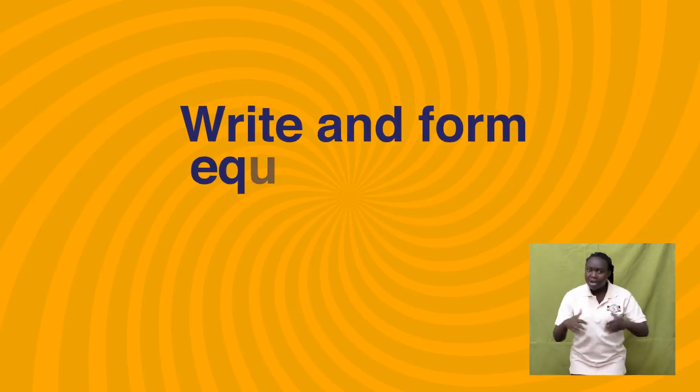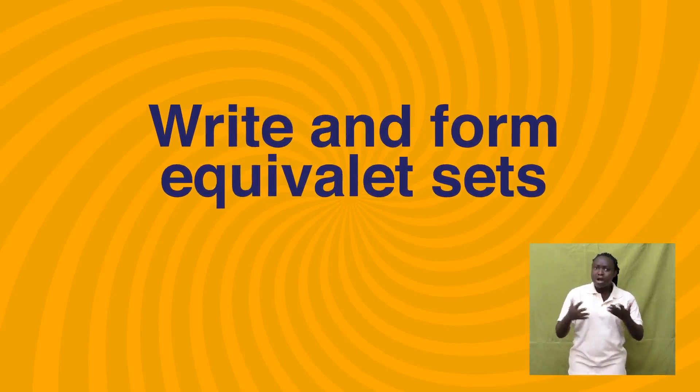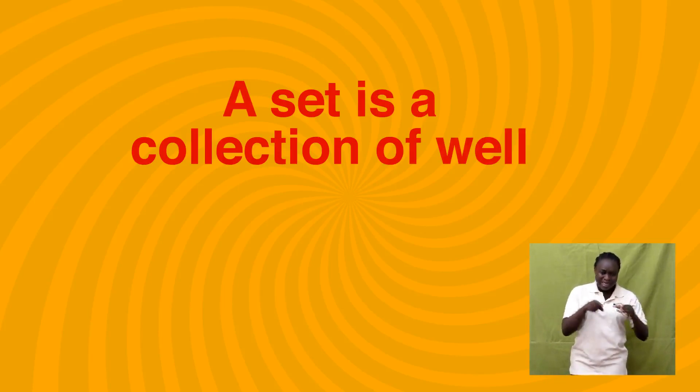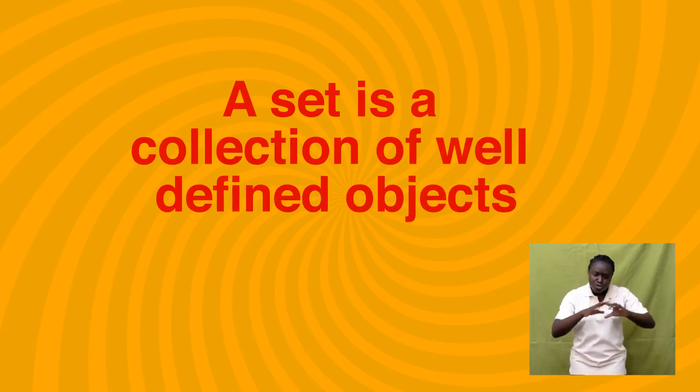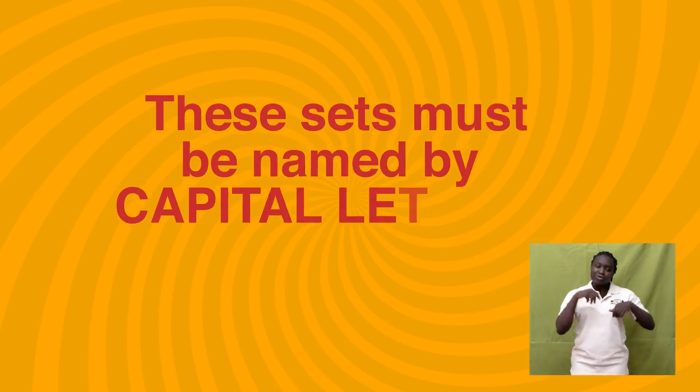Welcome back from that short break. In primary three, you looked at forming and naming sets. Now you are going to write and form equivalent sets. Remember we said a set is a collection of well-defined objects, and these sets must be named by capital letters. Look at these examples.